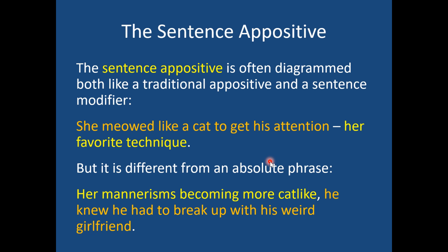A sentence appositive is often diagrammed like a traditional appositive but also as a sentence modifier — separate from the rest, enclosed in parentheses. It differs from an absolute phrase: an absolute phrase has a noun followed by some kind of adjective or modifier, like 'her mannerisms becoming more cat-like — he knew he had to break up with his weird girlfriend.' A sentence appositive often ends on the noun, like 'her favorite technique,' and is renaming the entire preceding sentence. They look structurally similar but perform two different jobs. Key distinction: absolute phrases are separated by commas; sentence appositives are separated by dashes.